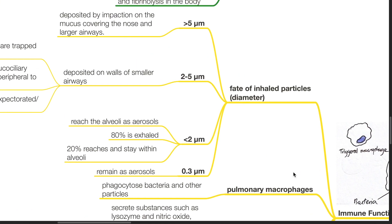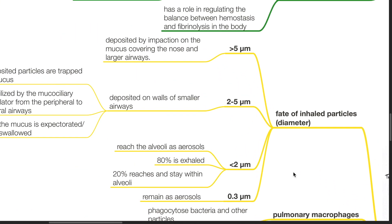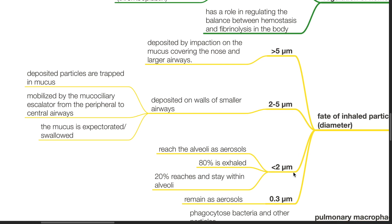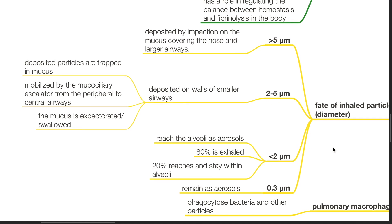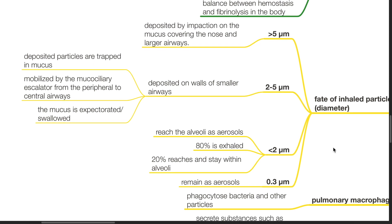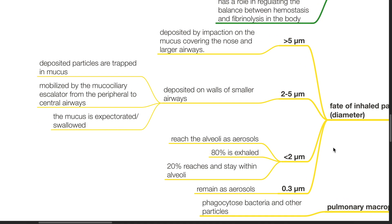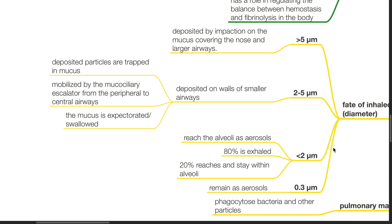These have a role in regulation of the balance between hemostasis and fibrinolysis in the body. Immune functions. The fate of inhaled particles according to diameter: for particles more than 5 micrometers, these are deposited by impaction on the mucus covering the nose and the larger airways. For particles 2 to 5 micrometers, these are deposited on the walls of smaller airways. Deposited particles are trapped in mucus and mobilized by the mucociliary escalator from the peripheral to the central airways. The mucus is then expectorated or swallowed.